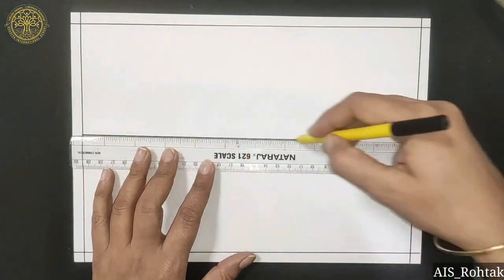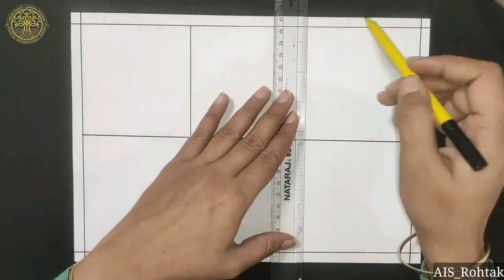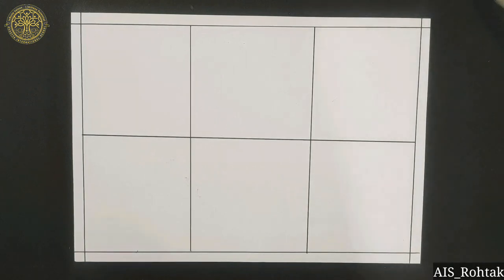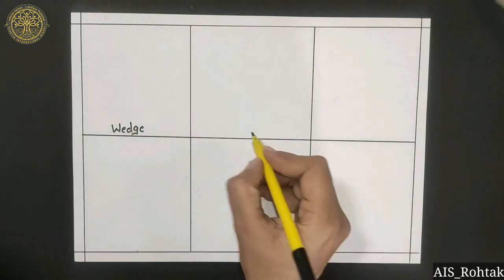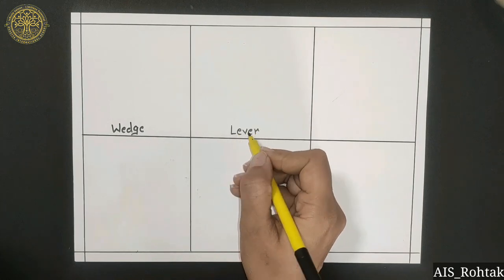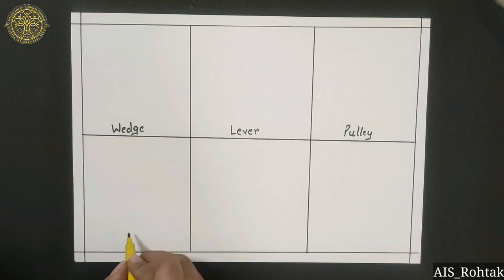For this we have to draw a straight line in the center and then divide into three equal parts like this. We write their names. First one we are going to draw is wedge, second is lever, third is pulley, fourth is